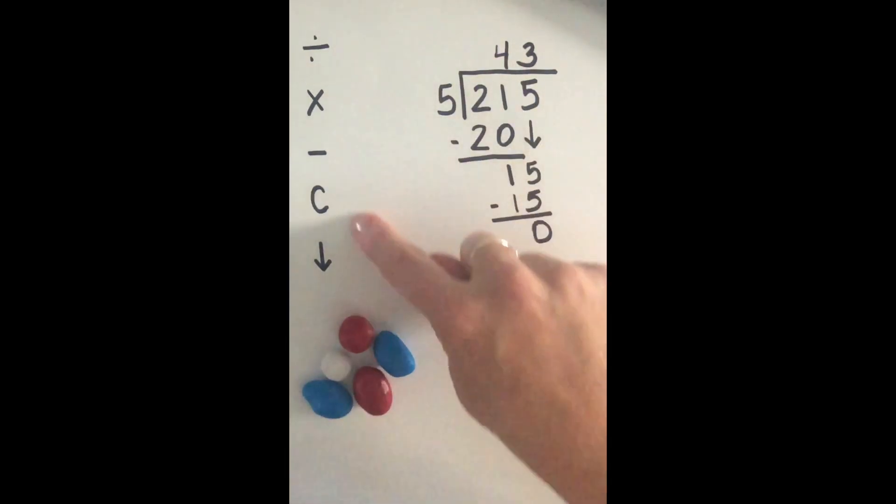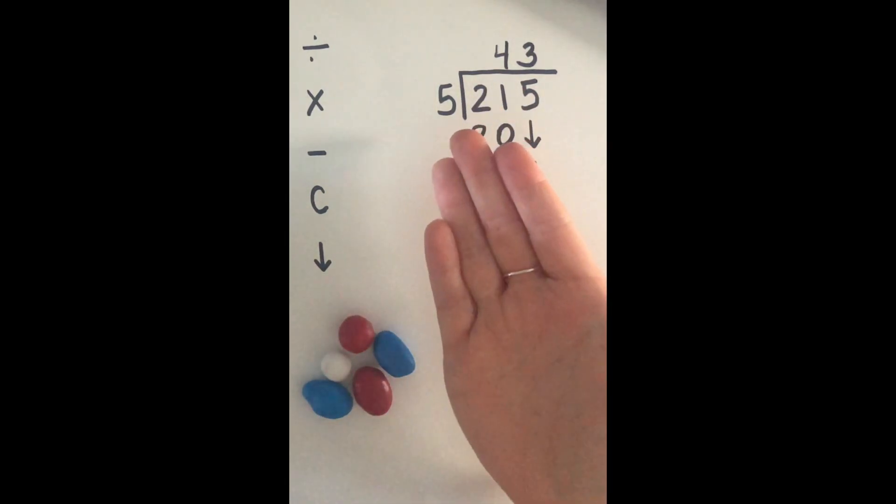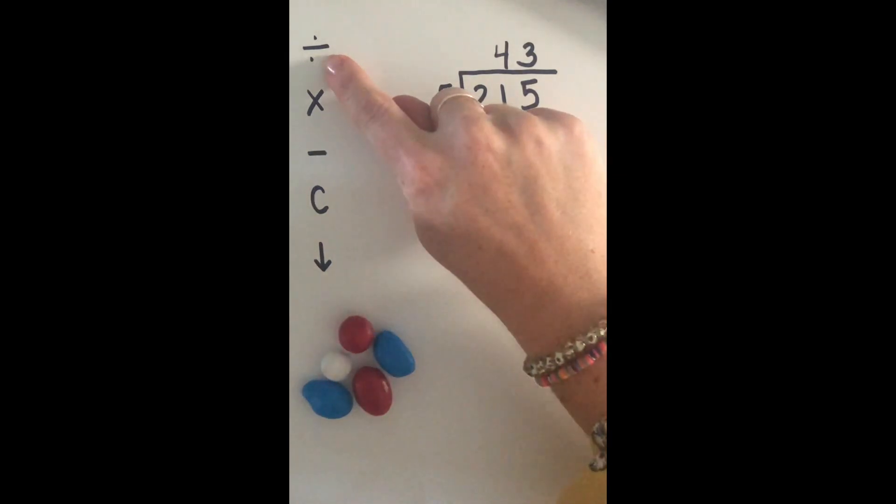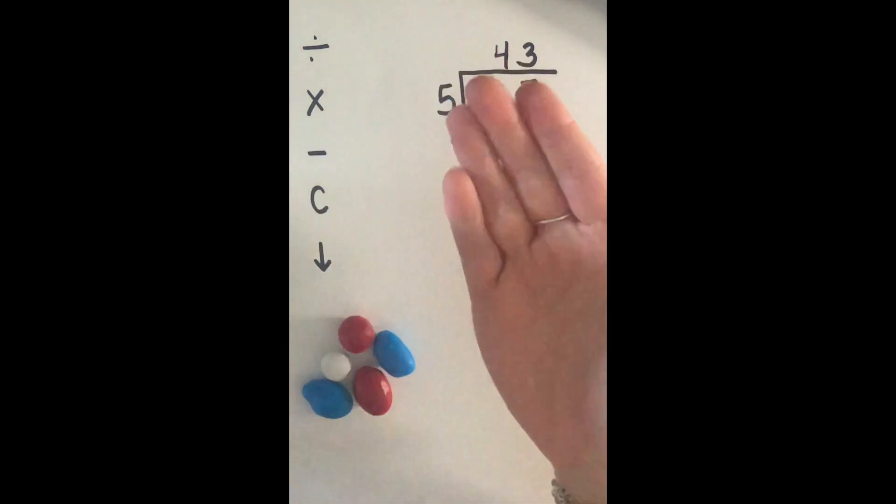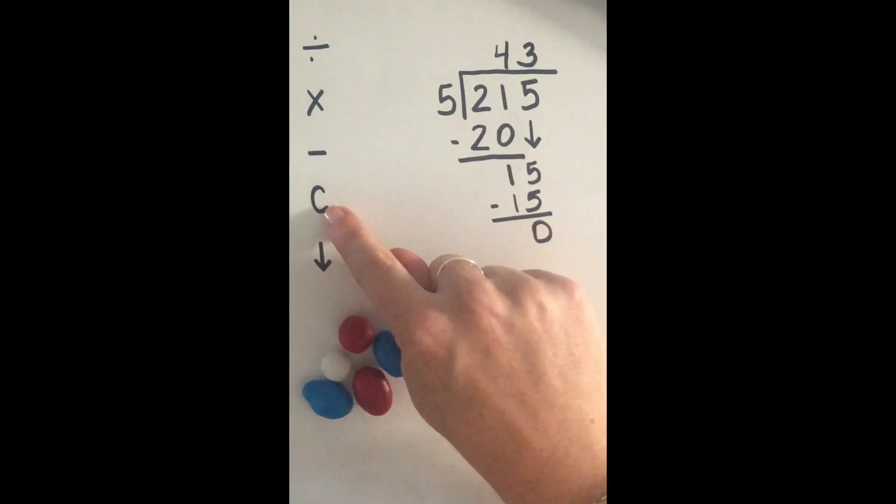How can we remember these five steps? Easy, by song. When I hold my hand like this, repeat after me. First you divide, then multiply. Subtract, compare, and then bring down.